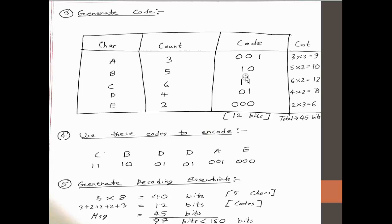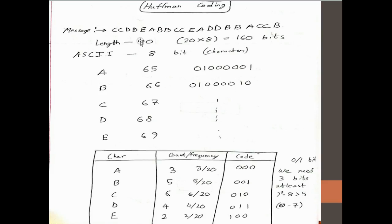In the reverse order. So now that we're done, we can use this same code to encode the message. So the beginning of the message was something like C, C, D, D, E, A.